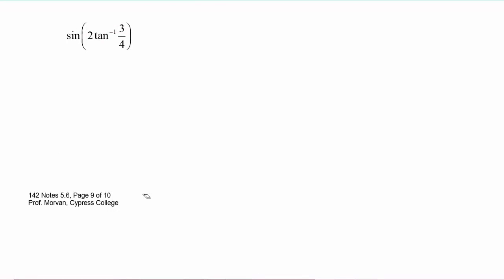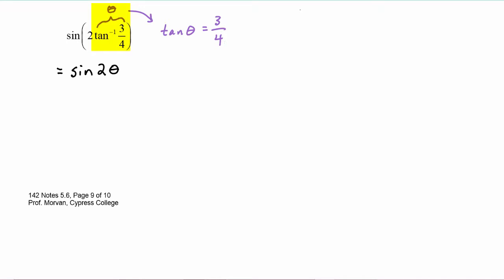In this next problem we have to find the sine of two times the tangent inverse of three-fourths. Remember that the tangent inverse is just going to output an angle we can call theta. So this problem is asking us to find the sine of two times theta. Now if theta is the tangent inverse of three-fourths, then that means that the tangent of theta is equal to three-fourths, and we can draw that picture.